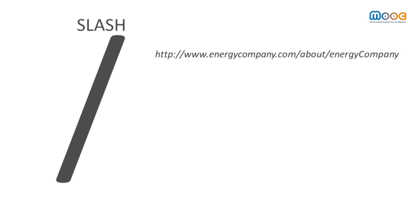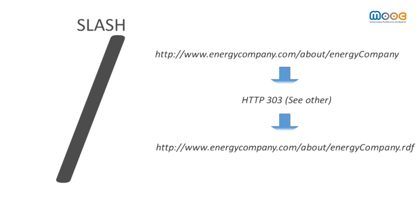When using a slash URI, when we access a resource, a redirection is created through a new document that contains the resource. The disadvantage of this approach is that we have multiple HTTP requests instead of only one, and that we have to configure the web server and the redirections.